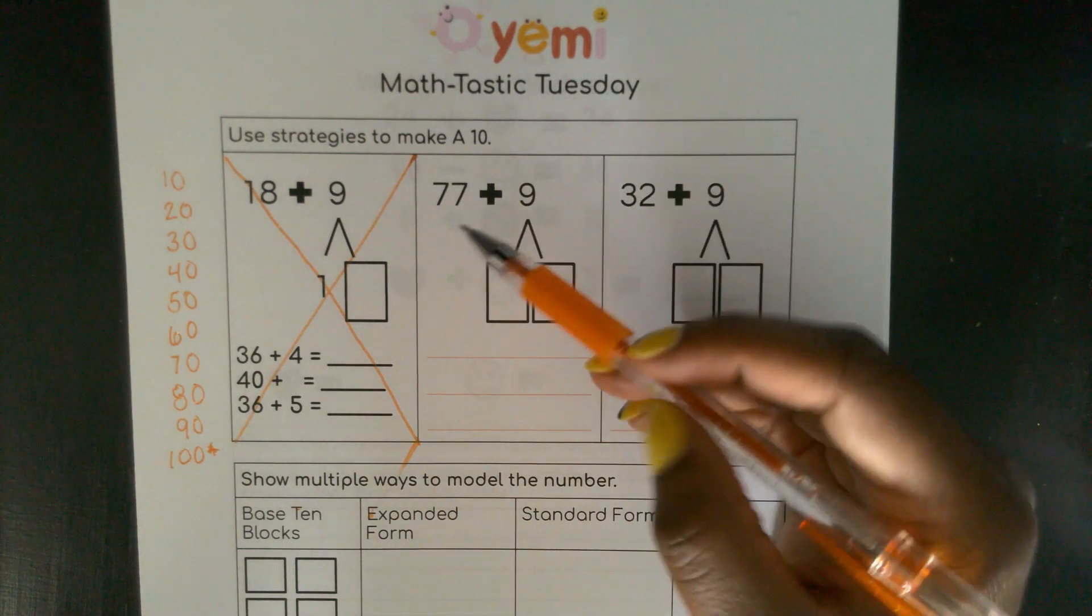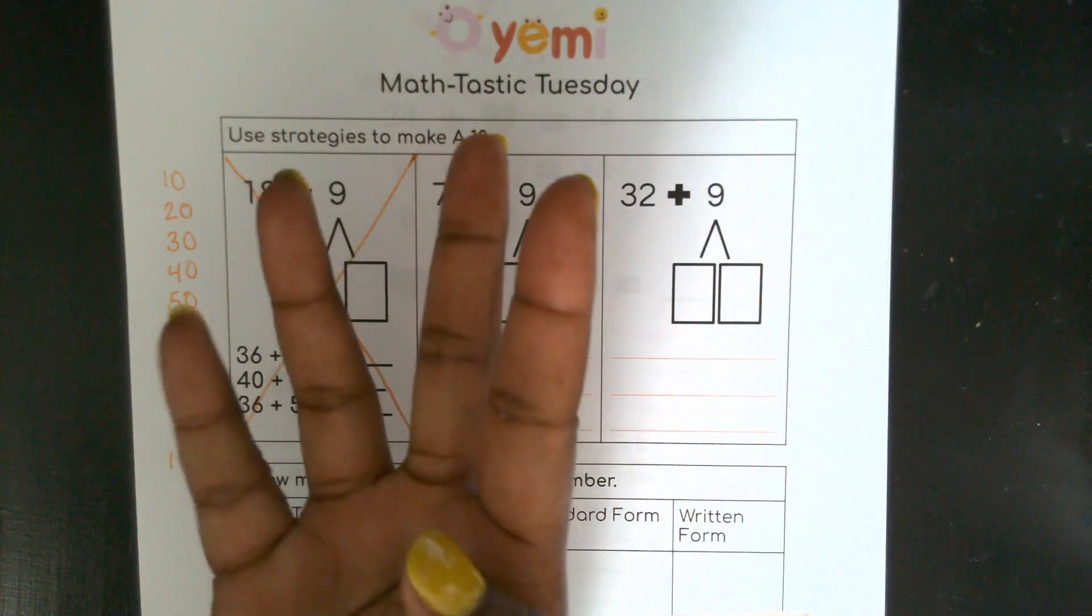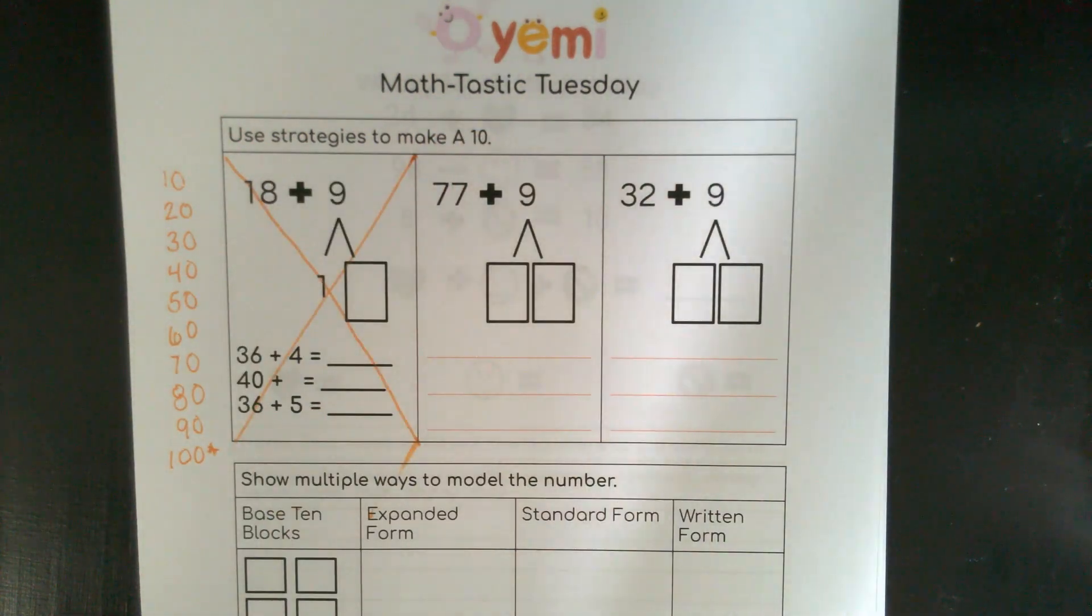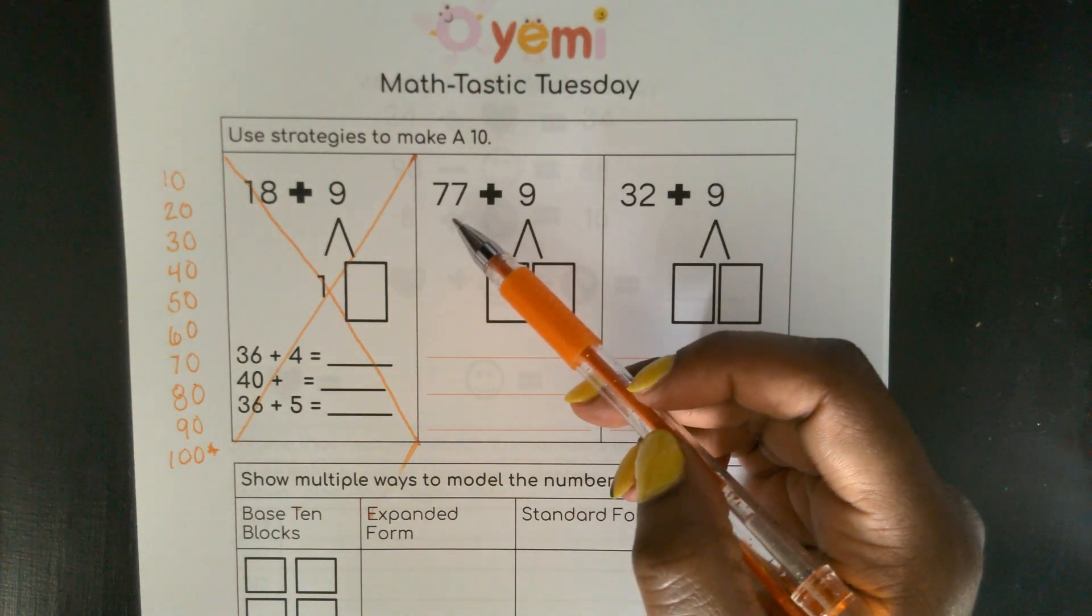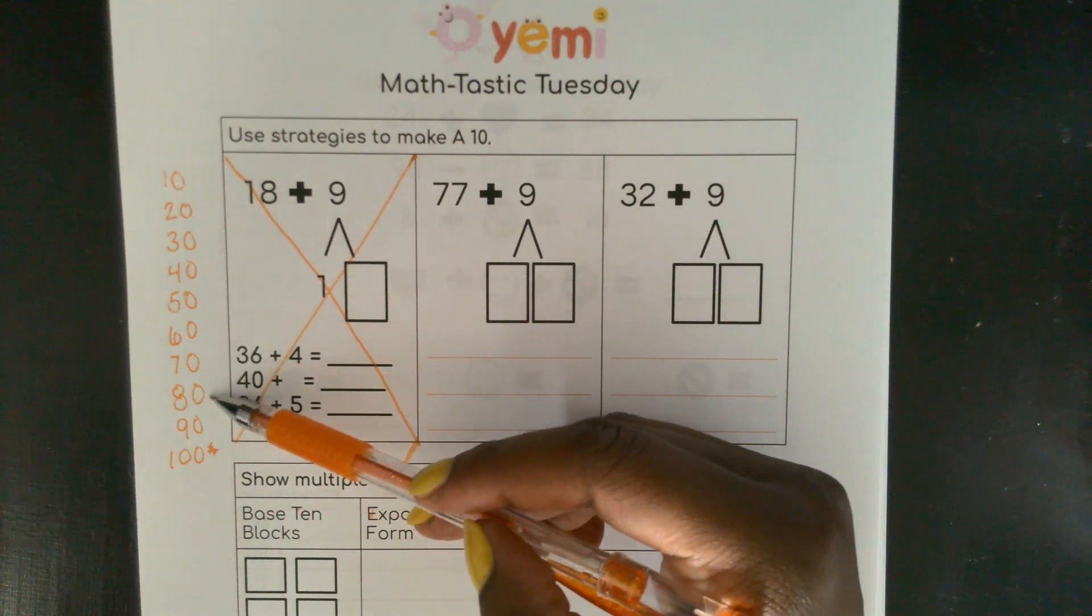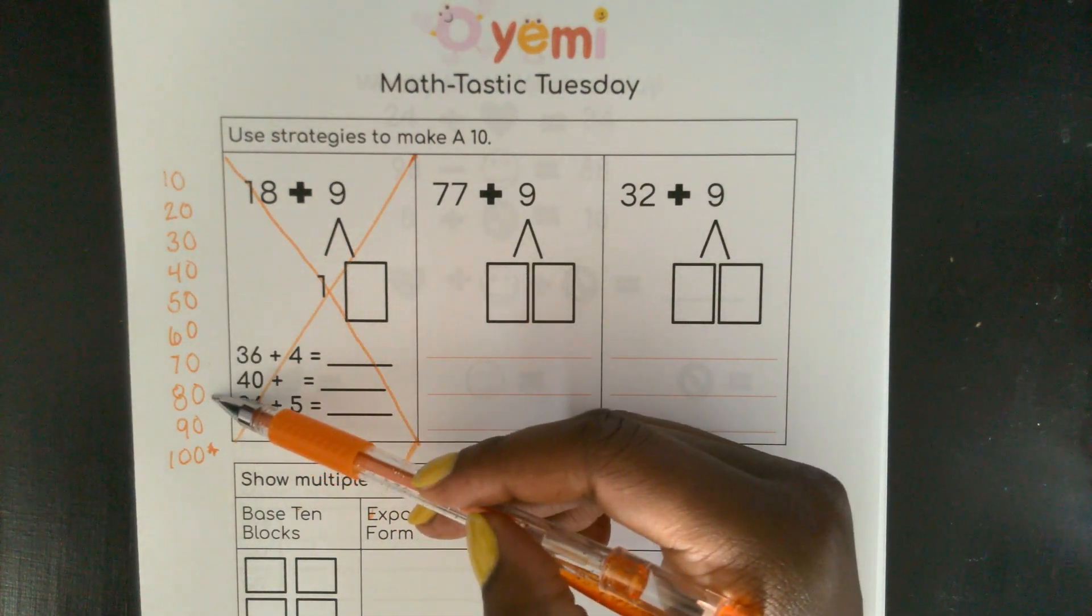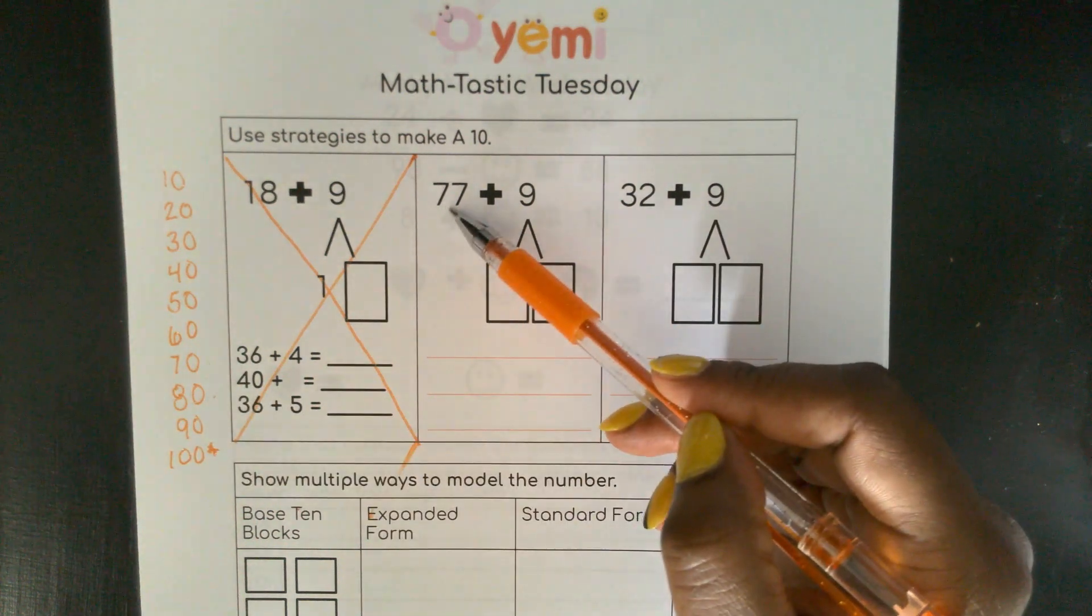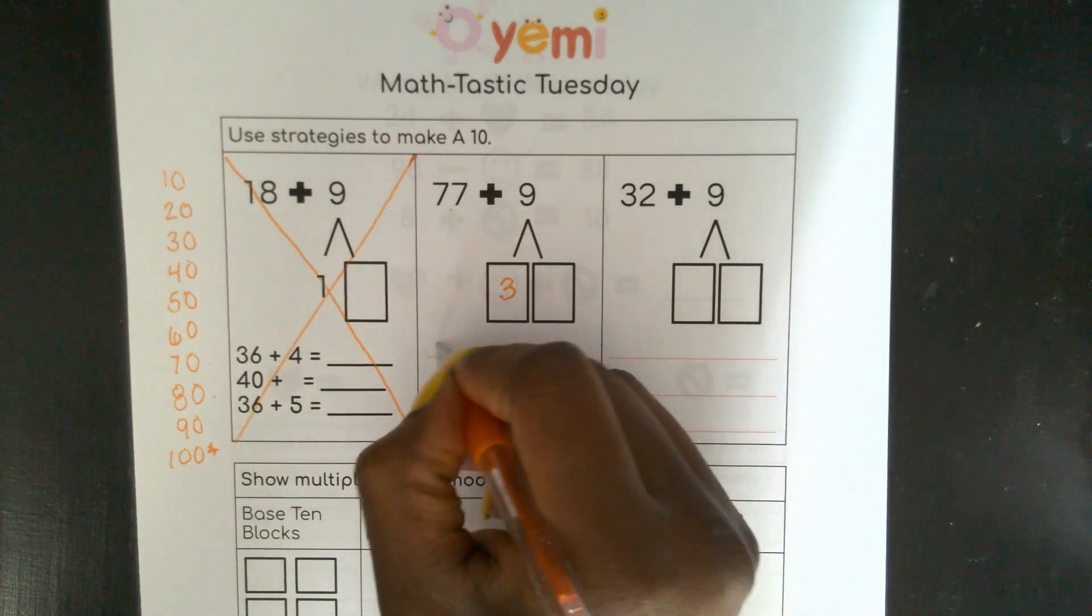So here we have 77 plus 9. Another one that we could use our fingers to count up, but we can use what we know about making 10 to help us. So if I'm at 77, how many more do I need to make the next 10? So I'm at 70. The next 10 is 80. 77 plus 3 would give me my next 10.